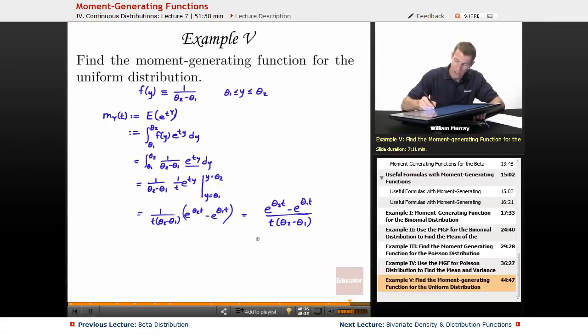That's my moment generating function for the uniform distribution. Notice that this is a function of t now. There are no y's anywhere. That is what is supposed to happen with a moment generating function. It should always be a function of t. It should not have any y's anywhere in there. So, this is my complete answer here. And I'm done with that example, except for maybe a quick recap of the steps there.